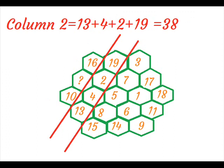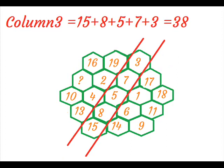On adding column 2, we get 13 plus 4 plus 2 plus 19 is equal to 38. On adding column 3, we get 15 plus 8 plus 5 plus 7 plus 3 is equal to 38.